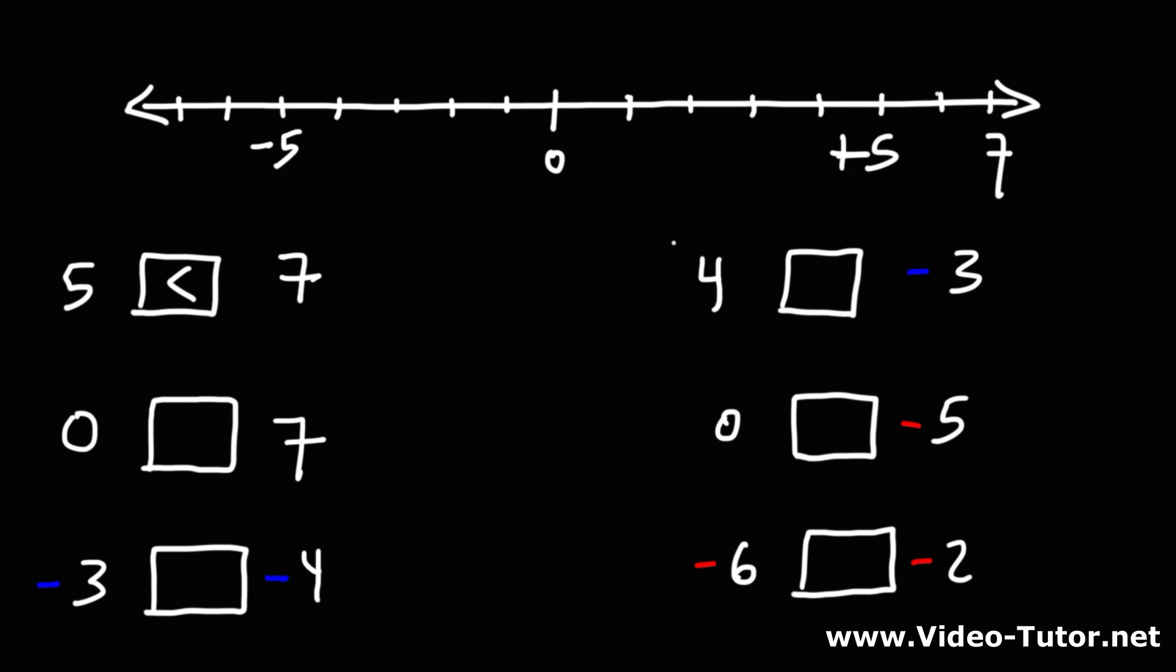Let's look at our second example. Which one is greater, 4 or negative 3? Positive numbers are always greater than negative numbers. So here is positive 4, here is negative 3. 4 is to the right of negative 3 on the number line, so 4 is greater.